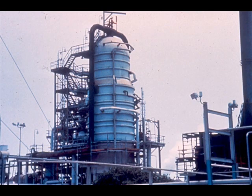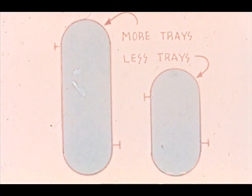Towers such as this one are large in diameter. The diameter or width of a tower depends on the amount of material that the tower must handle. Tower height depends on the difficulty of the separation — the more difficult separations require more trays, and the less difficult separations will require fewer trays.